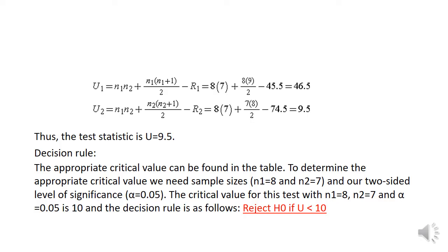For the decision rule, the appropriate critical value can be found in the table. To determine the appropriate critical value, we need the sample sizes N1 equals 8 and N2 equals 7 and our two-sided level of significance alpha equals 0.05. The critical value for this test with N1 equals 8 and N2 equals 7 and alpha equals 0.05 is 10. The decision rule is as follows: Reject the null hypothesis if U is less than 10.